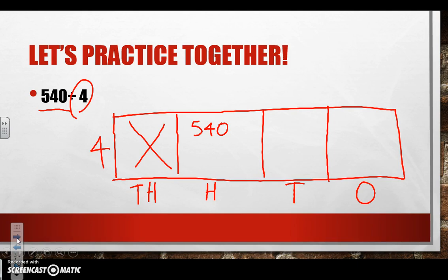Okay, we're going to ask ourselves how many times can 4 go into 5? It goes in one time, but remember because it's in the hundreds place we need to add on those two zeros to make it accurate. We're going to multiply 4 times 100 which gives me 400.